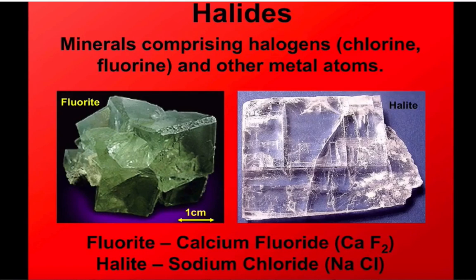The halides are a group of minerals where the metal is bonded to a halogen atom, such as fluorine or chlorine. There are two minerals on our list which fall into this: fluorite and halite.